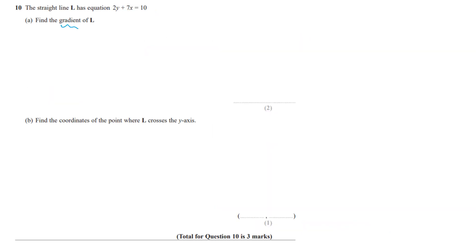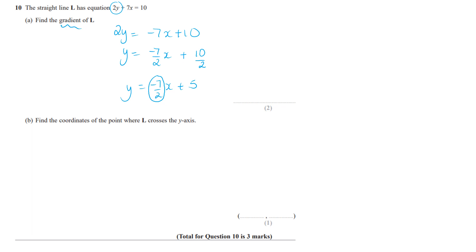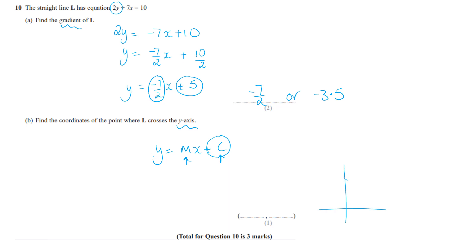Number 10: you can't find the gradient unless y is the subject. Rearranging 2y = −7x + 10 gives y = −7/2 x + 5. In y = mx + c form, the gradient m is the coefficient of x, so it's −7/2 or −3.5. The y-axis intercept c is 5, giving the coordinate (0, 5).